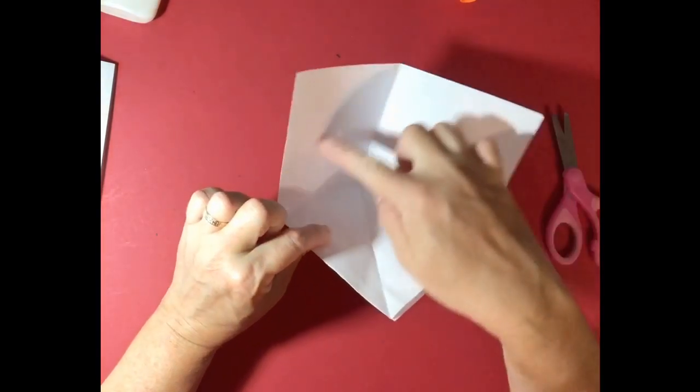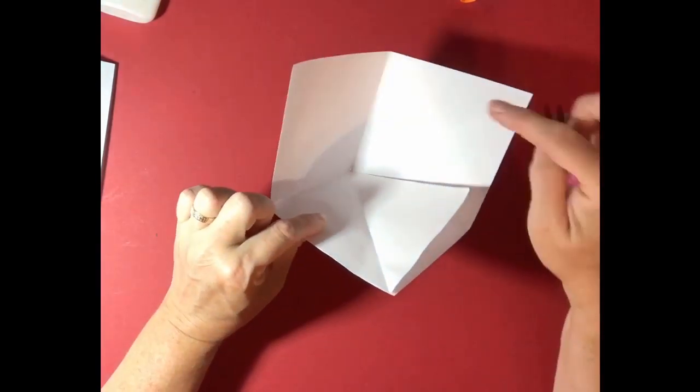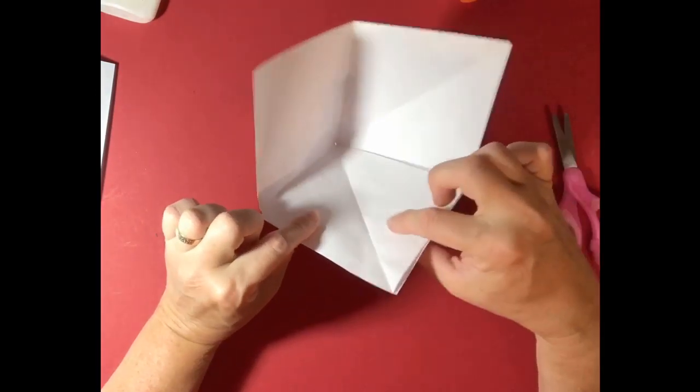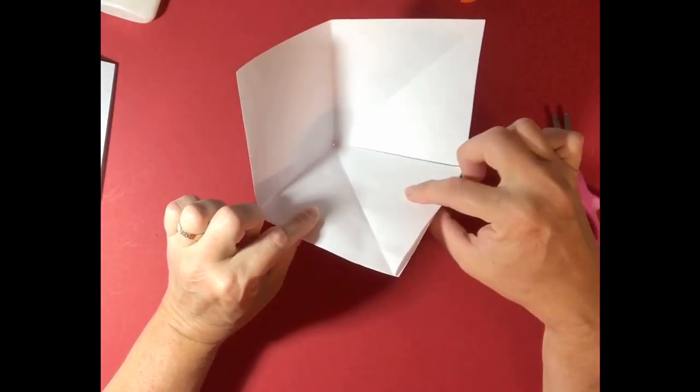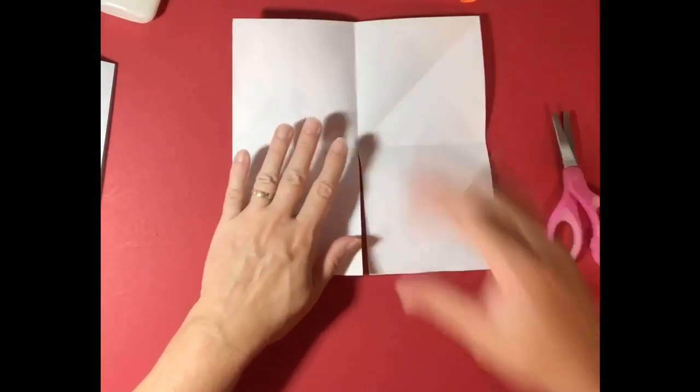So this is going to be the backdrop like the hills, mountains, skies, whatever in my castle's background. And then this part is going to be the grass area. So I'm going to go ahead and I'm going to decorate that.